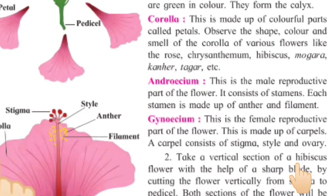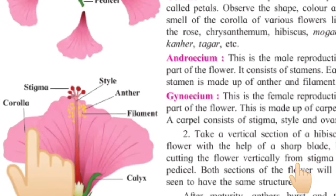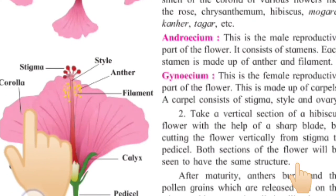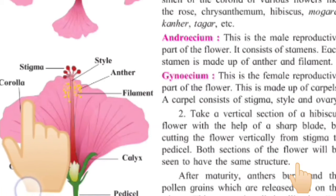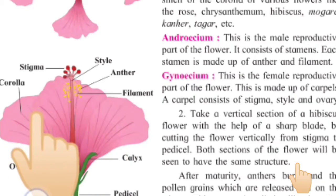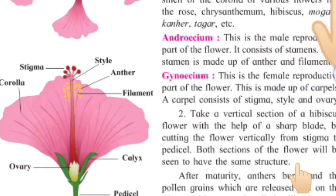The corolla consists of petals which vary in color, shape, and smell. The shape, color, and smell of the corolla are different for different flowers.